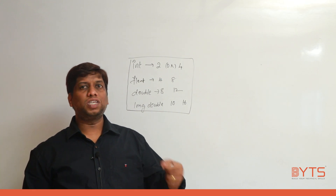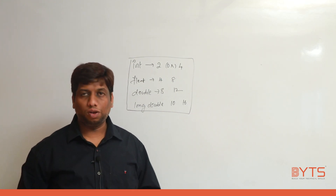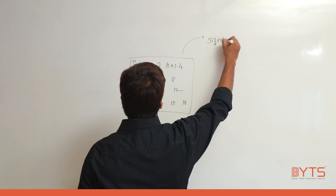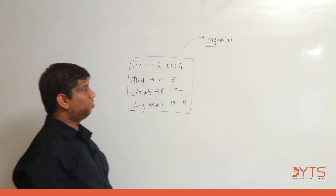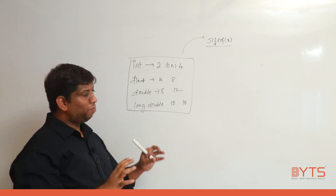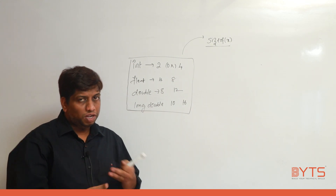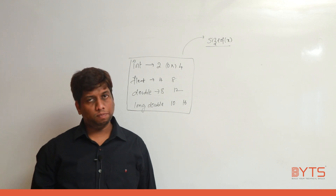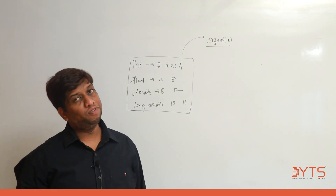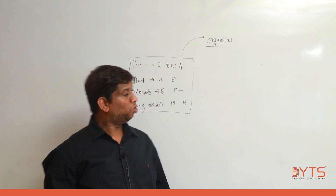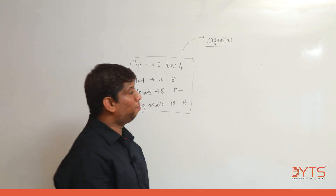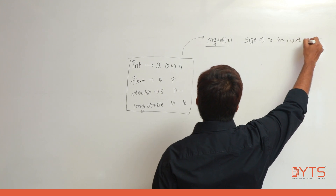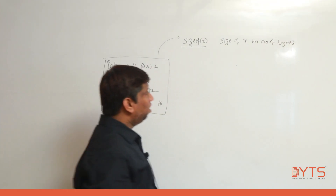So if the sizes of data types are varying, how can we know them? For that purpose, we have a concept called the sizeof operator. Just as addition gives a sum, subtraction gives a difference, and relational or logical operators give 1 or 0, sizeof gives you the size of x in number of bytes.